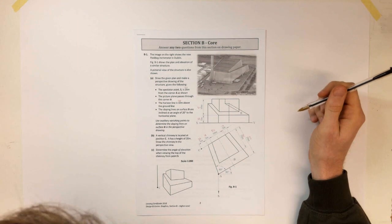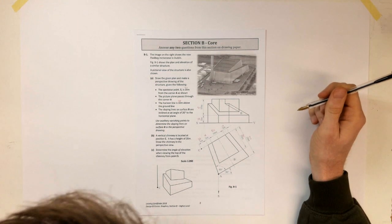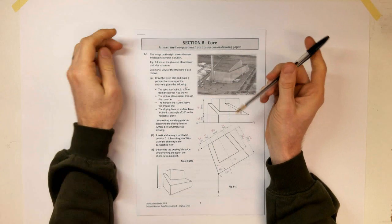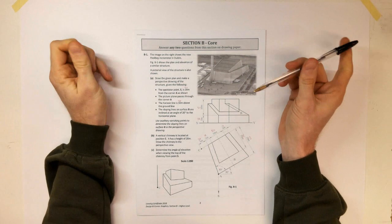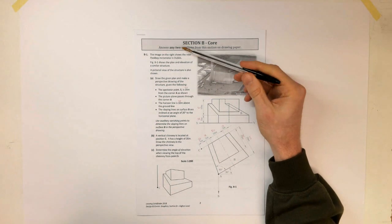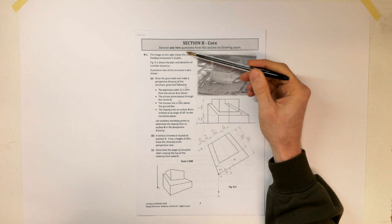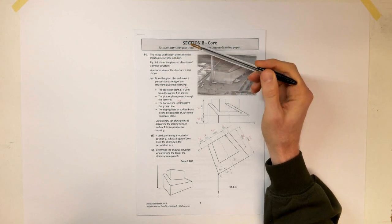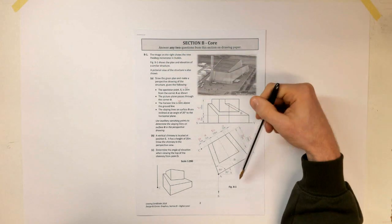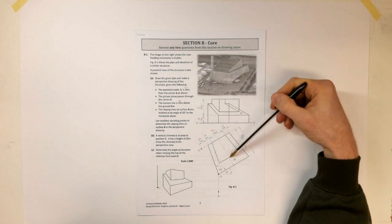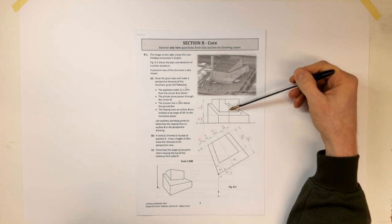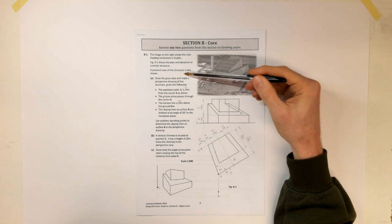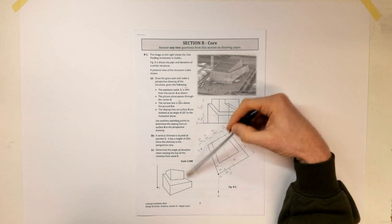Welcome back to Leaving Cert 2018. This is the higher level paper, question B1, and this was a perspective projection question. The image on the right shows the new Ringsend incinerator in Dublin. Figure B1 shows the plan and elevation of a similar structure. The pictorial view of the structure is also shown here.